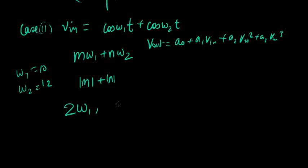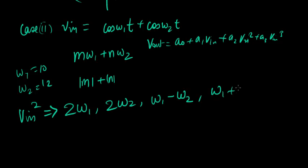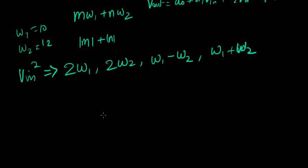Vin² will produce what? 2·ω1, 2·ω2, ω1 minus ω2, and ω1 plus ω2. If you actually use these numbers and plot it on a little FFT, what do you get?